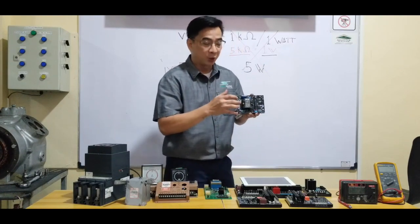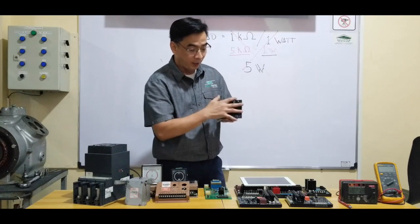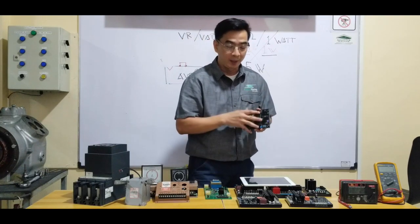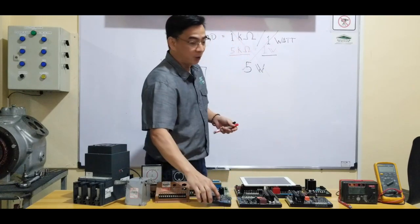So every AVR, it has a voltage trimmer. Okay? So we will adjust it on the AVR itself because we have a defective remote potentiometer. All right?